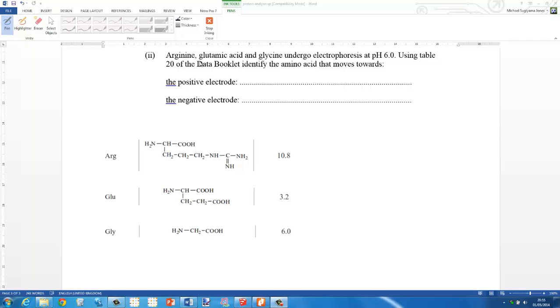In this question we have arginine, glutamic acid, and glycine and they undergo electrophoresis at pH 6. That's important. Using table 20 of the data booklet, identify the amino acid that moves towards the positive electrode and the negative electrode. Actually it's now table 19.